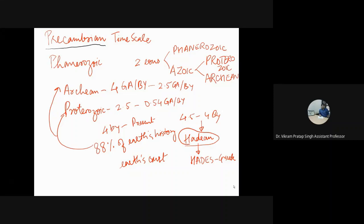The Pre-Cambrian–Cambrian boundary falls at 0.542 billion years or 542 million years. In some texts this figure may be updated, so for the exact time notation go for the most recent geological time scale published by the ICS. We can say that the Pre-Cambrian–Cambrian boundary is marked at approximately 0.5 billion years or 550 million years.